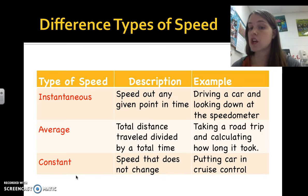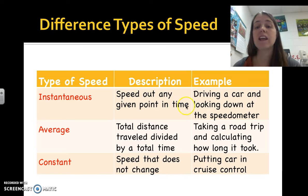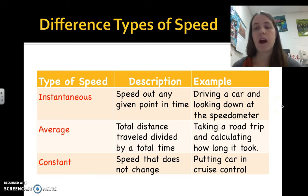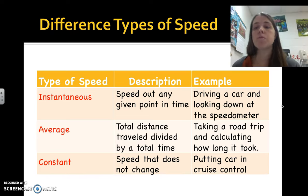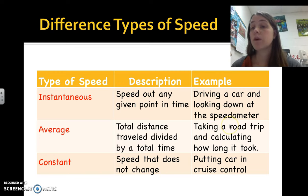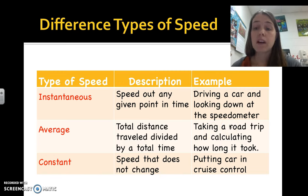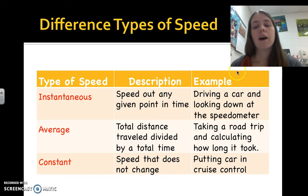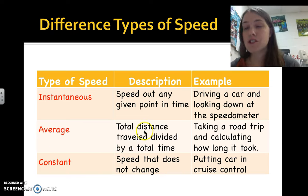Instantaneous speed is like looking down at your speedometer while driving — right now I'm going 57 miles per hour, now 59 miles per hour. Average speed is like taking a road trip: it took me three hours to go 300 miles, which works out to 100 miles per hour average.